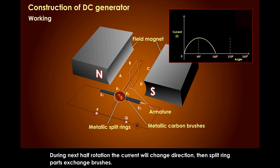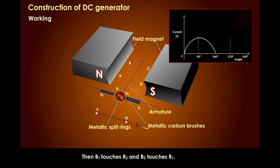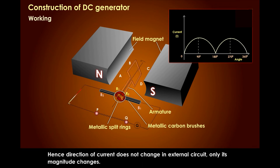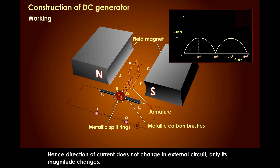Then the split ring parts exchange brushes — B1 touches R2 and B2 touches R1. Hence, the direction of current does not change in the external circuit; only its magnitude changes.